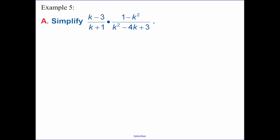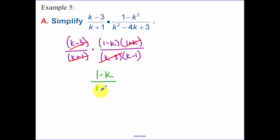Now one that's a little bit more complicated. You have to factor these first. They have to be in factors. k minus 3 doesn't factor, k plus 1 doesn't factor. 1 minus k squared, that's a difference of two squares. k squared minus 4k plus 3, that's going to become a k minus a 3 and a k minus a 1. So now let's look at what I can cancel. k plus 1's cancel, k minus 3's cancel. So what am I left with? I'm left with 1 minus k over k minus 1.